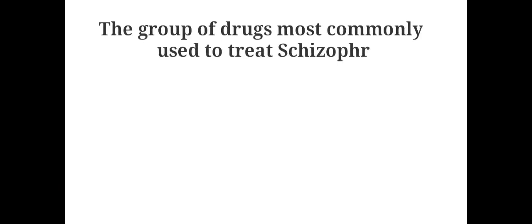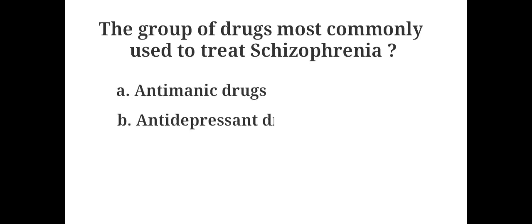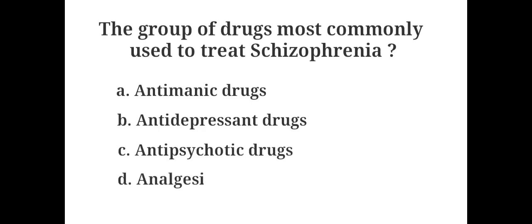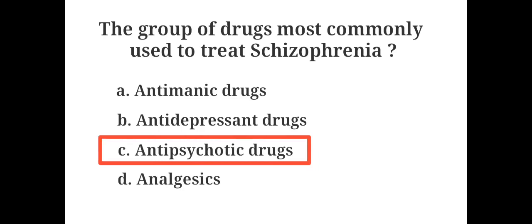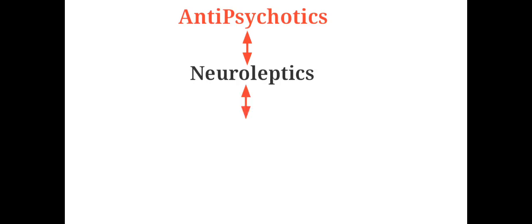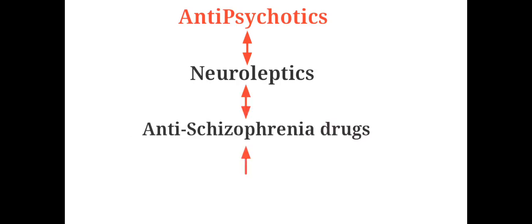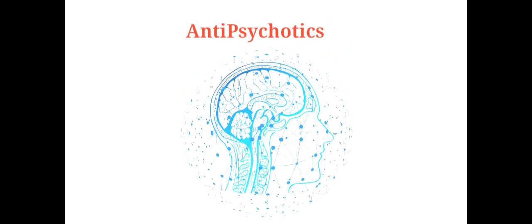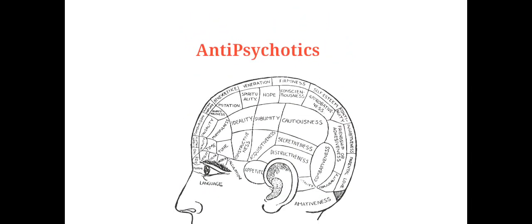The group of drugs most commonly used to treat schizophrenia: A. Antimaniac drugs, B. Antidepressant drugs, C. Antipsychotic drugs, D. Analgesics. The answer is C. Antipsychotic drugs. Antipsychotics are also known as neuroleptics, antischizophrenia drugs, or major tranquilizers. They are thought to control symptoms by affecting the brain neurotransmitter dopamine.